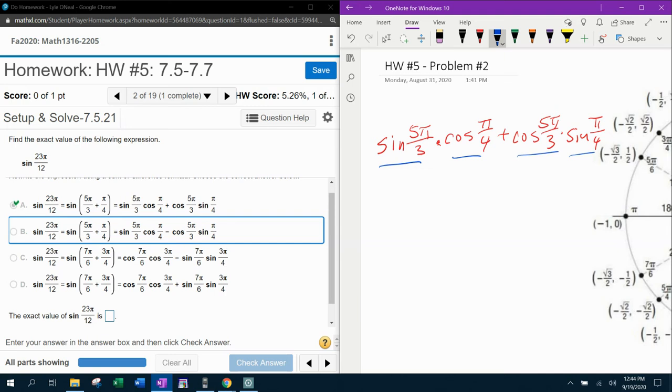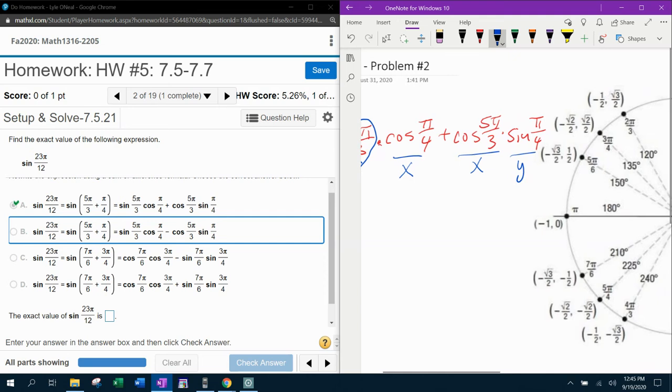So remember in the unit circle, sine is y, cosine is x, cosine is x, sine is y. So the first thing I need is I need the y coordinate at 5π over 3.